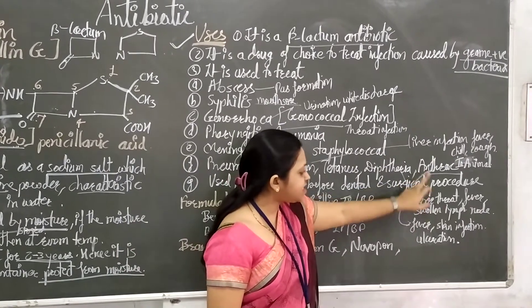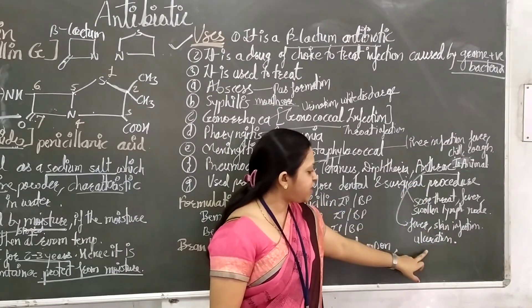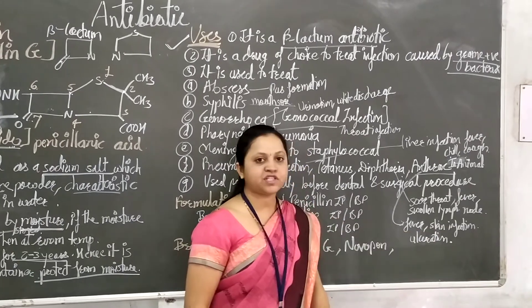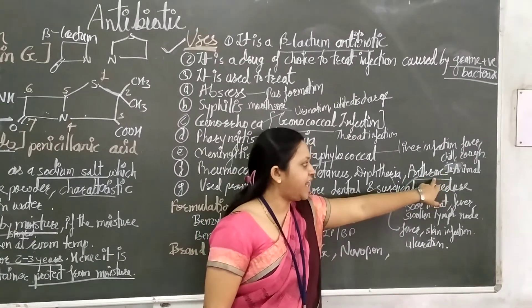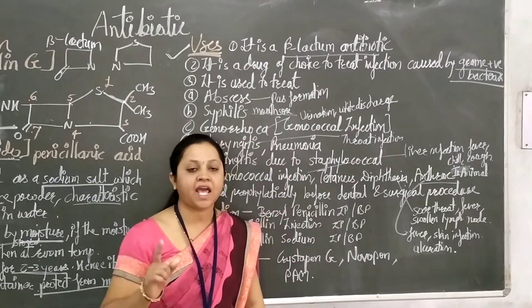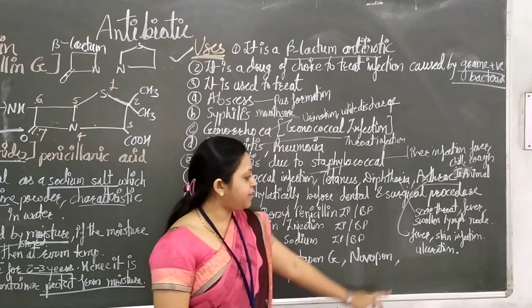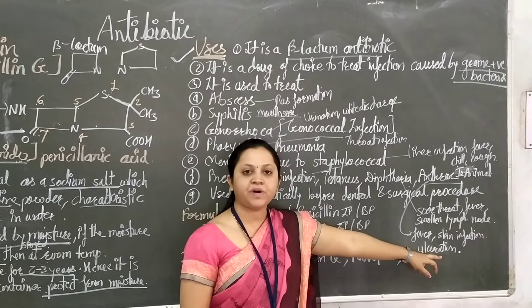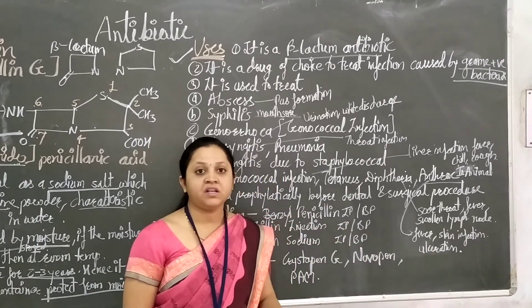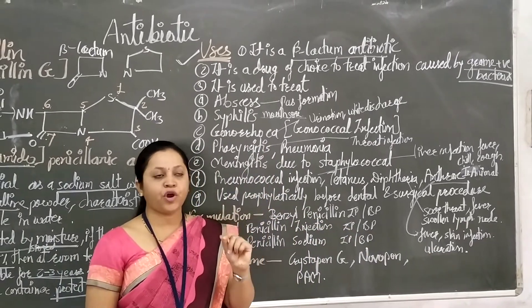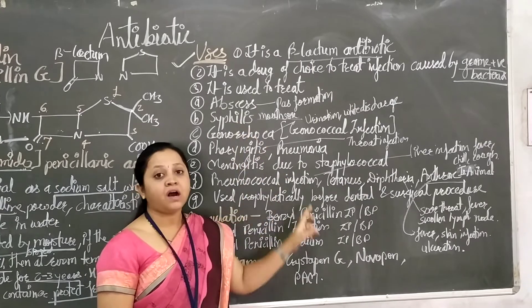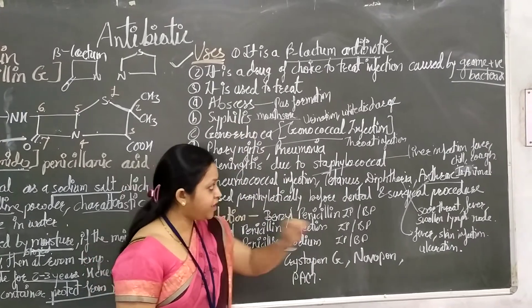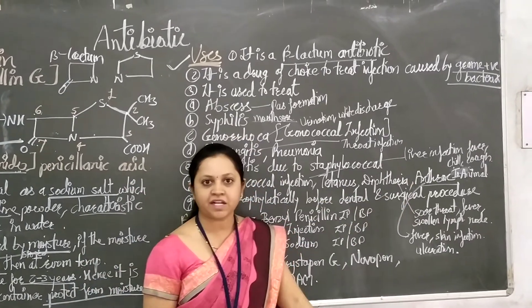Anthrax - also causes fever, skin infection, and ulceration. This is also a skin infection, particularly in animals. Anthrax is a disease particularly in animals with fever, skin rashes, pain, and abscess-like formations with ulceration. All these are categorized under anthrax disease.